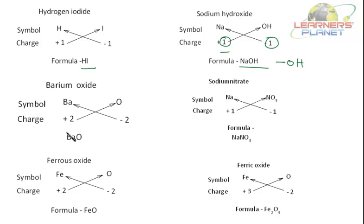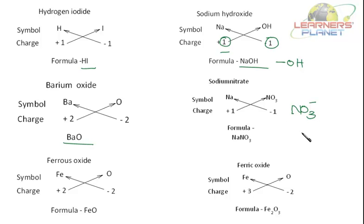Barium oxide is an ionic compound. The charge on barium is 2 plus and oxide is minus 2. Cross placement gives BaO. For sodium nitrate, nitrate is a radical — a group of atoms with a charge. It is an ionic radical that goes together in a chemical reaction, and cross placement of these charges gives the formula.